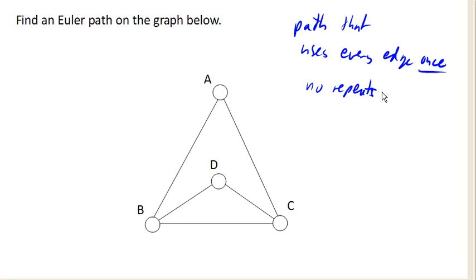So for example, if I started here, I could go this way. Let's say that's step one. And then I could go here, that's two. And I could go here, and that's three. And I could go here, and that's four.